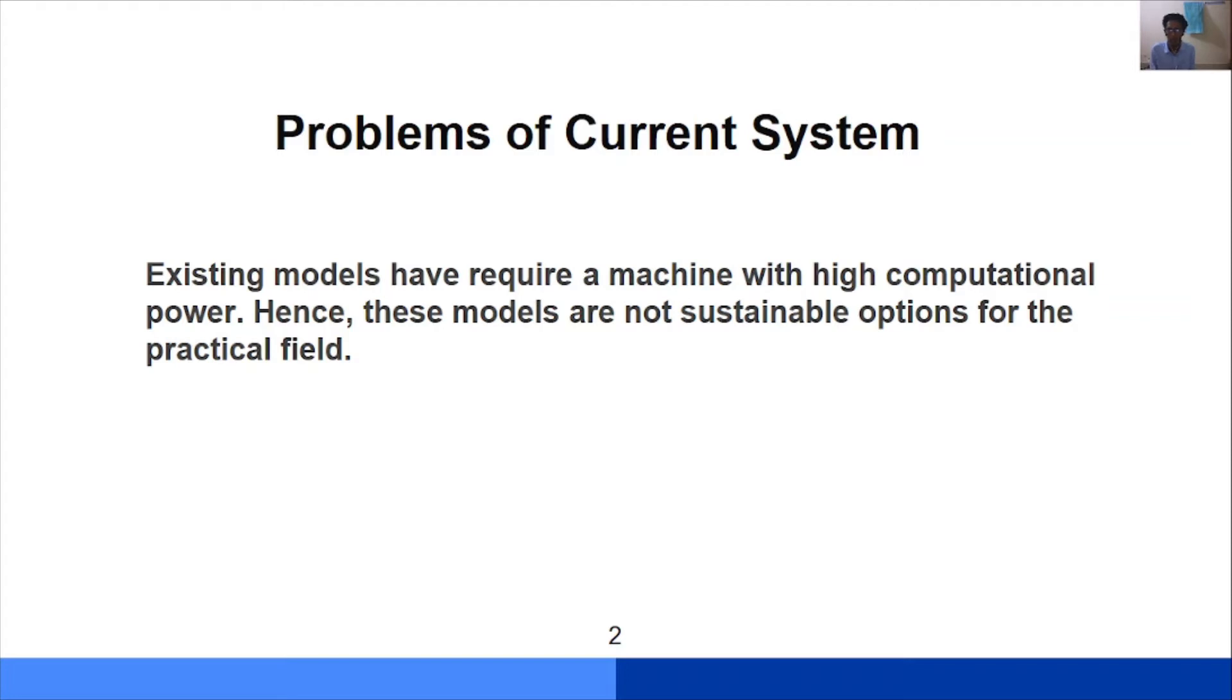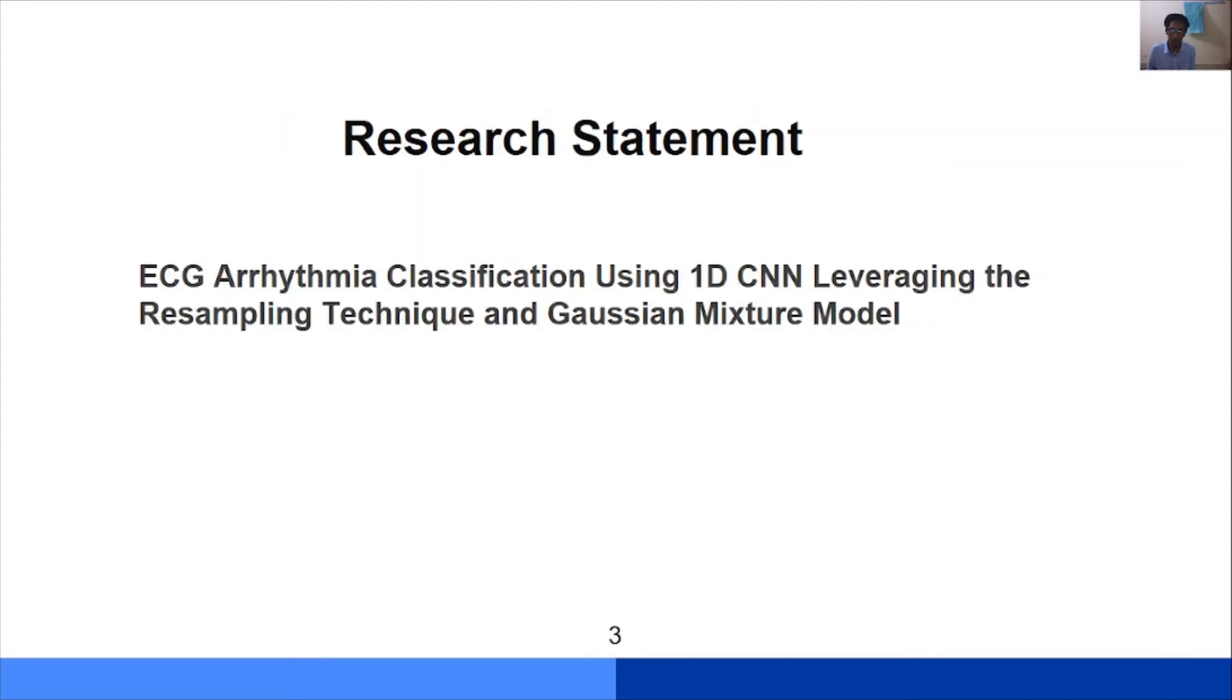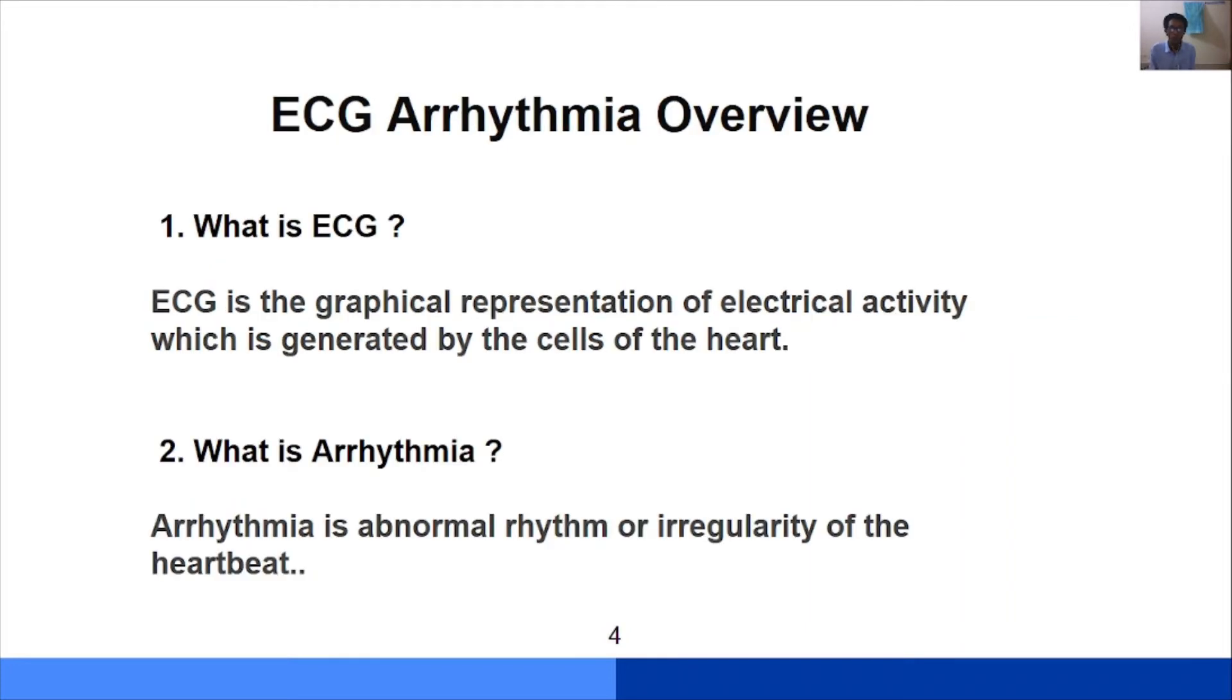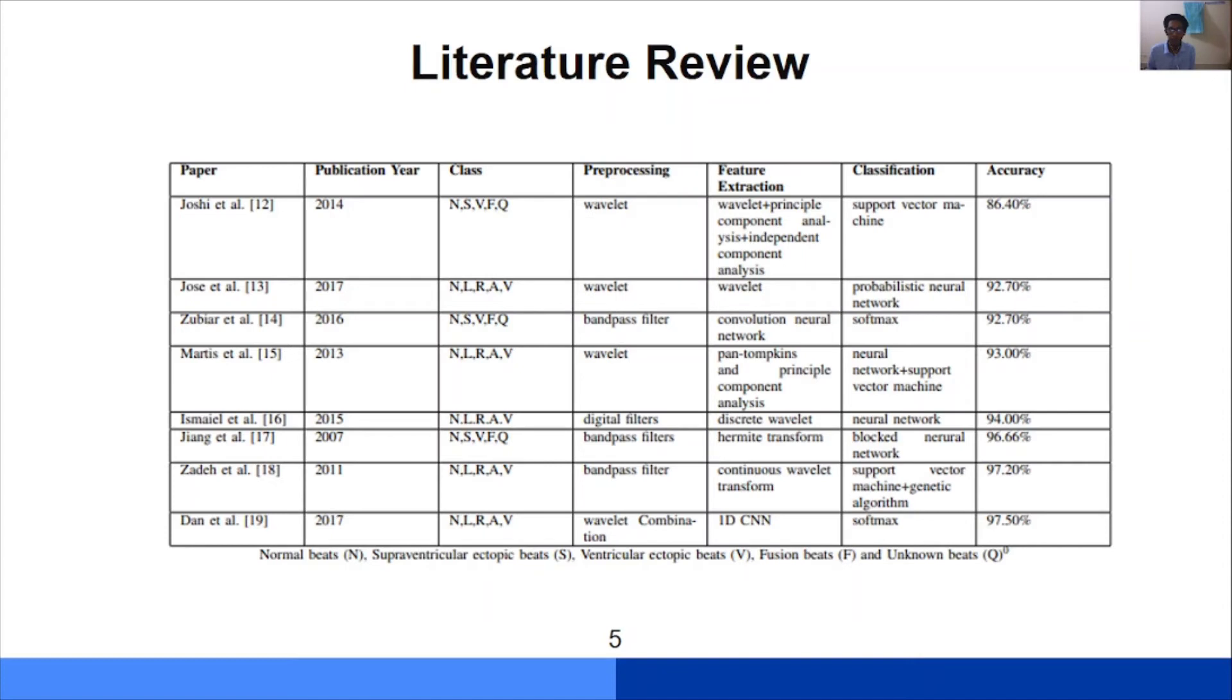Here is the research statement: ECG arrhythmia classification using 1D CNN leveraging resample technique and Gaussian mixture model. What is ECG? ECG is basically the graphical representation of electroactivity which is generated by the cells of the heart. What is arrhythmia? Arrhythmia is the abnormal rhythm of the heartbeat which denotes the irregularity of the heartbeat.